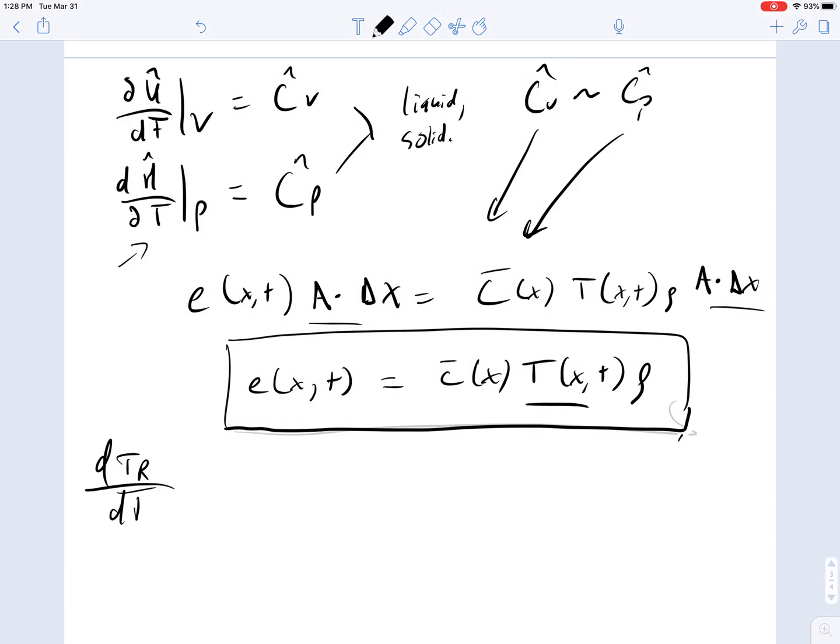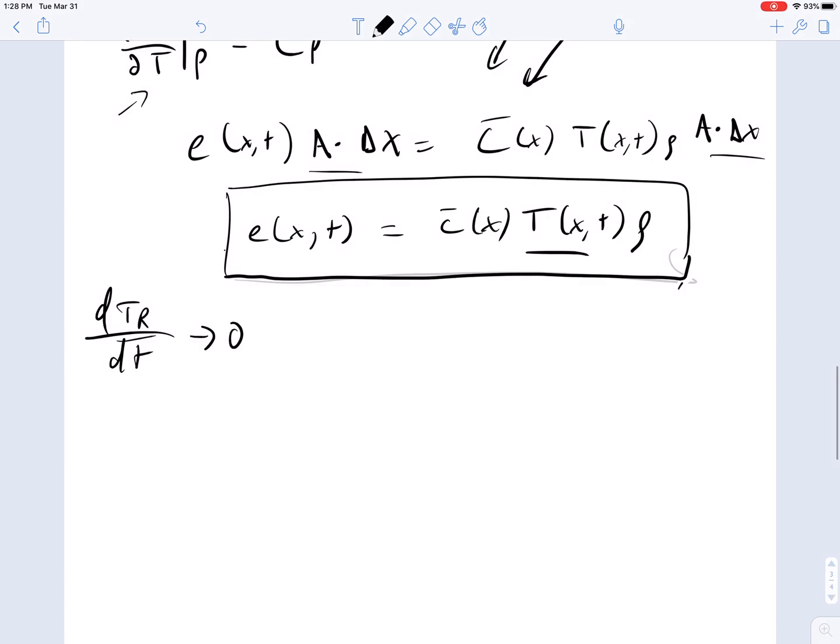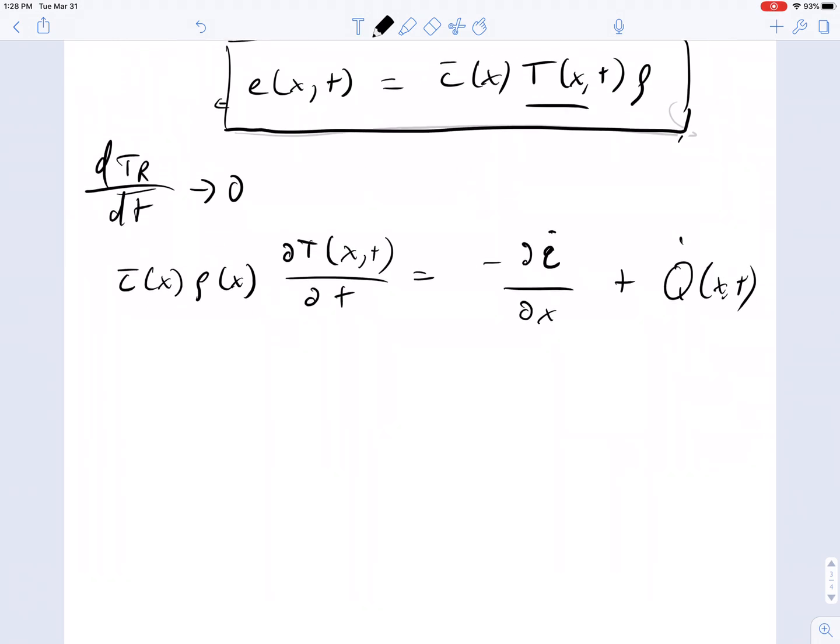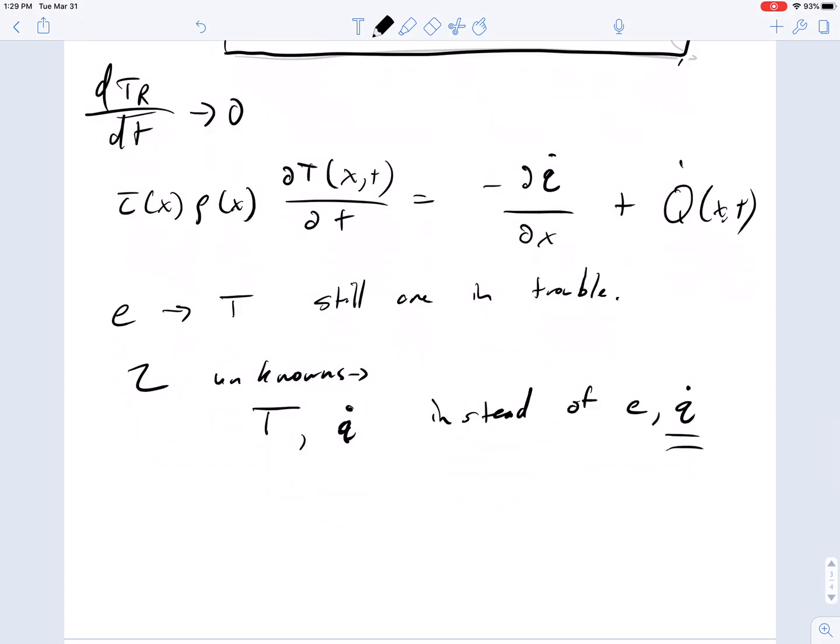We replace this relationship into our energy balance equation. We end up with c bar x rho of x partial of the temperature with respect to time del t equals minus del q del x plus q x comma t. We're still, all we did was replace e with t. We still are in trouble. Now we have two unknowns. We have t and q instead of e and q. So we still need another relationship to figure out what to do with q.